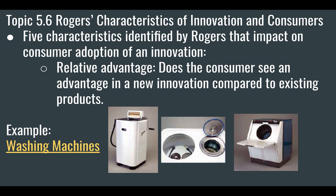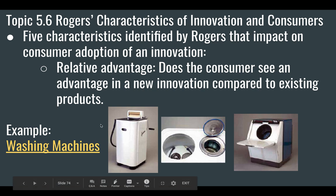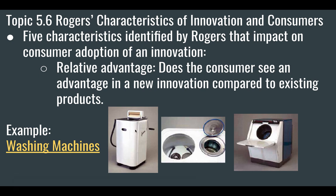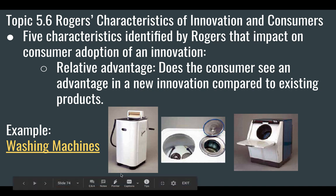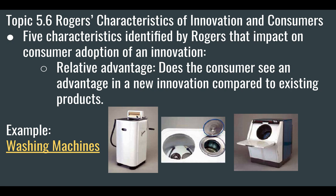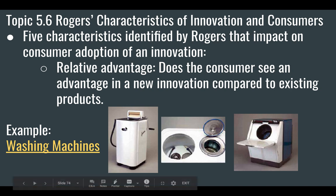Having a machine that actually washes your clothes for you was a huge advantage. These first came out in the early 1900s. This model is from about the 1940s — it would wash your clothes, but to get the excess water out for drying, you would feed your clothes through this roller and hand-crank them. So there's the advantage of not having to wash by hand, but you still had to wring them out.